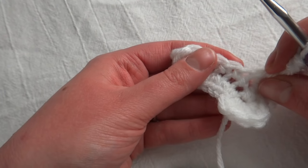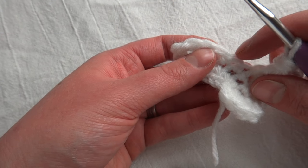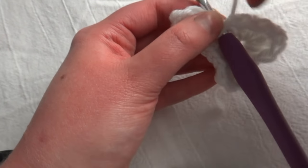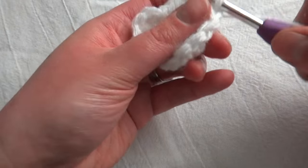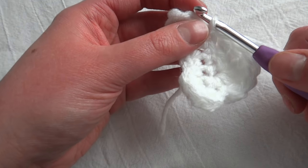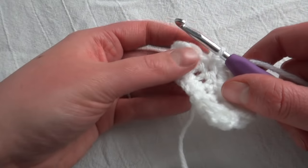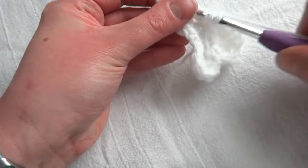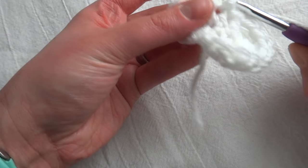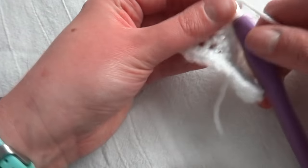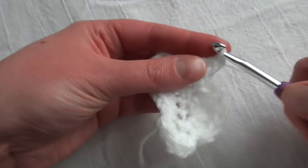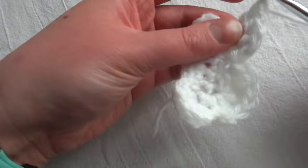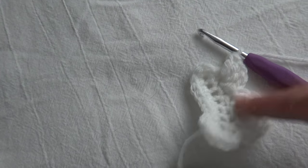The next thing you're going to do is skip two single crochets. Here's one, two, and then we're going to slip stitch in this one. And then in this next stitch, we're going to do four double crochets. So now we have three little cloud puffs.